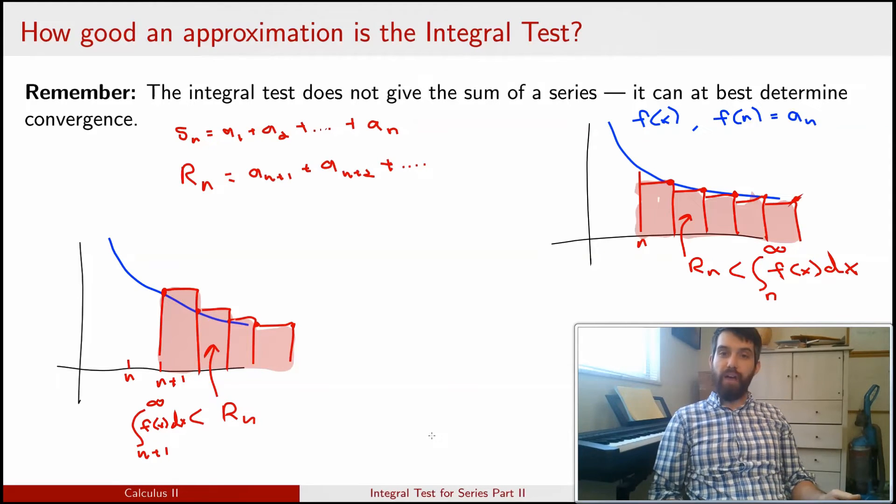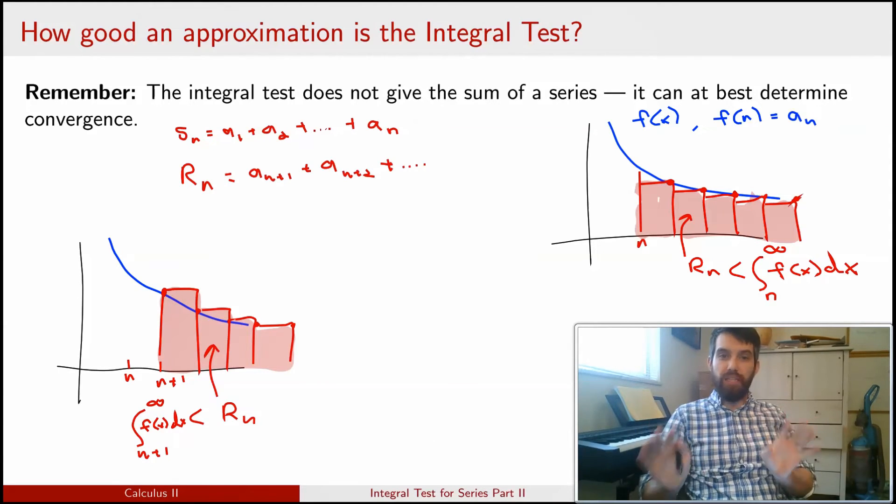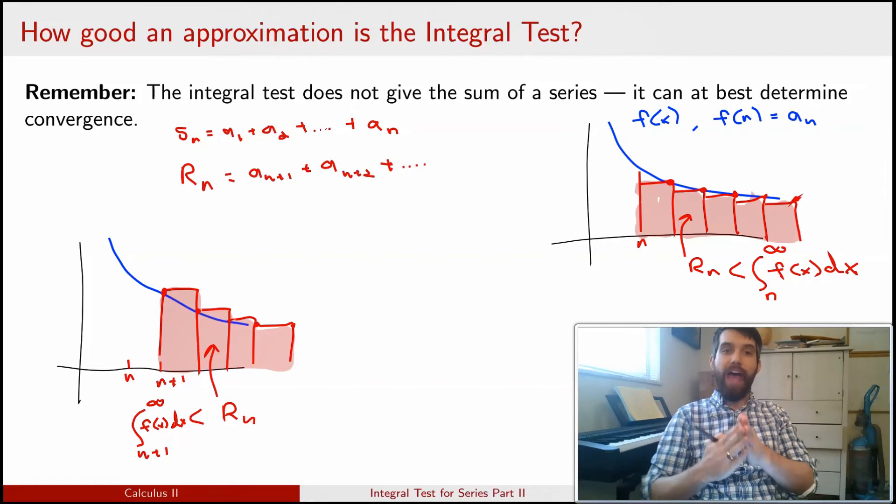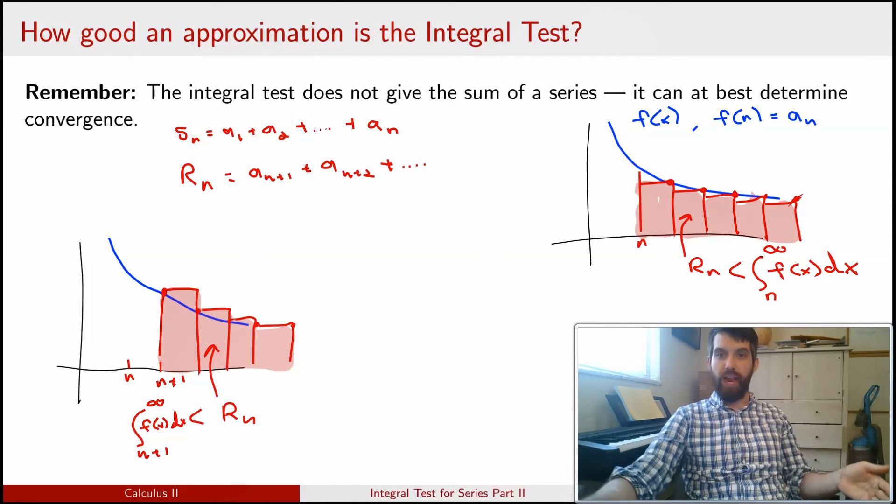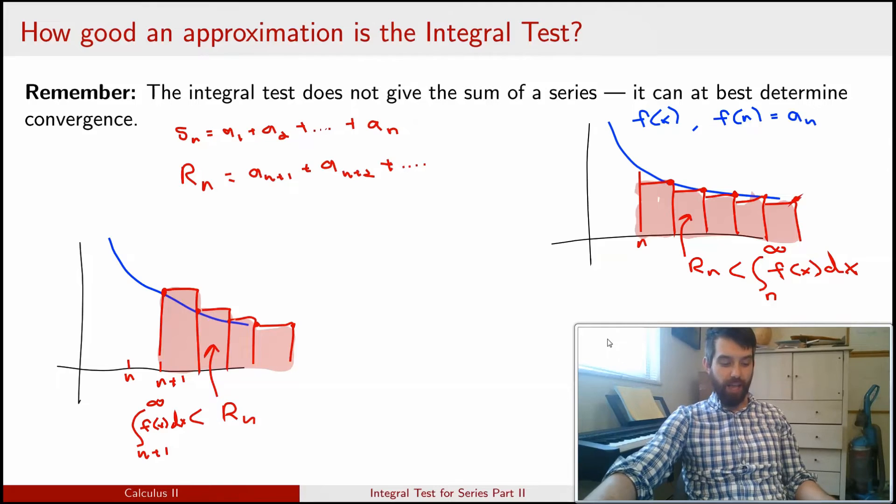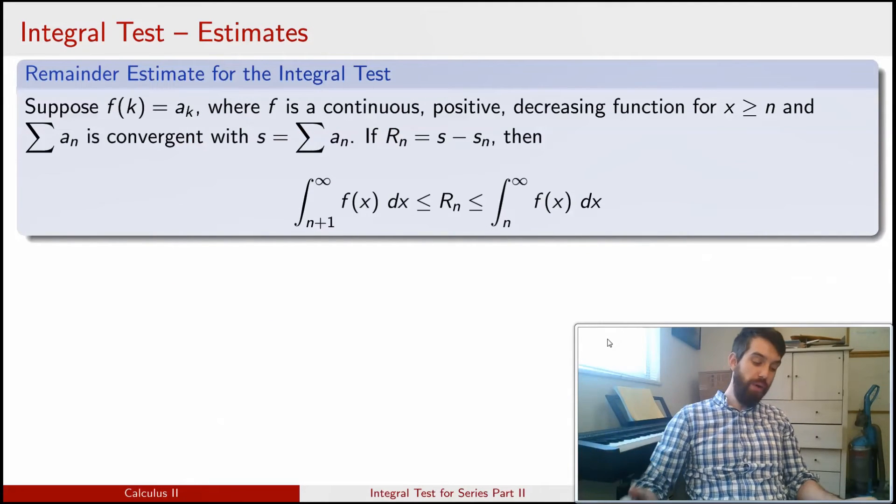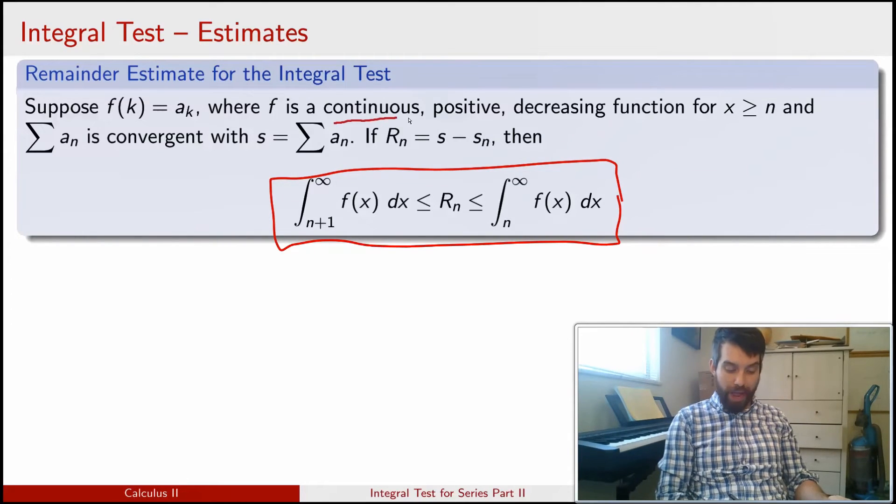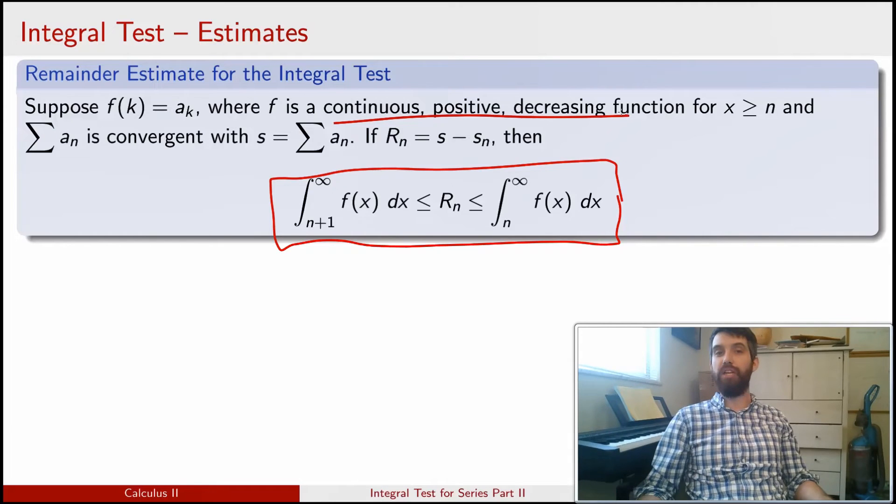In other words, I've managed to use two very slightly different integrals, one starting at n and one starting at n+1, and my remainder term, the an+1 all the way down to infinity, that is sort of sandwiched between the two of these. I can represent this as a particular theorem. In this scenario, my Rn is indeed bounded by these improper integrals when my function is a continuous, positive, and decreasing function. You get an analogous result if you have a continuous, negative, and increasing function.